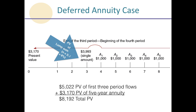We go into our present value of lump sum tables, looking for three periods at eight percent, and discount that three thousand nine hundred ninety-three dollars back to today. We find we would need to invest or deposit three thousand one hundred and seventy dollars today at eight percent. Adding the two numbers together — five thousand twenty-two dollars and three thousand one hundred seventy dollars — we find the total present value of this deferred annuity to be eight thousand one hundred and ninety-two dollars.